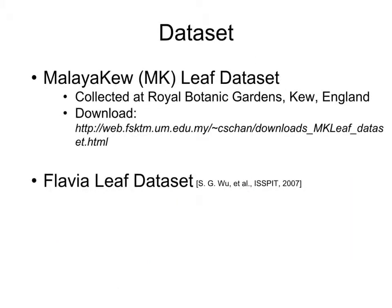In the experiments, we use two different datasets. The first dataset is the self-collected dataset, namely the Malaya Q-leaf dataset. It was collected at the Royal Botanic Gardens, Kew, England. If you are interested, please download from the given link. The second dataset used is the well-known baseline leaf dataset, the Flavia dataset.